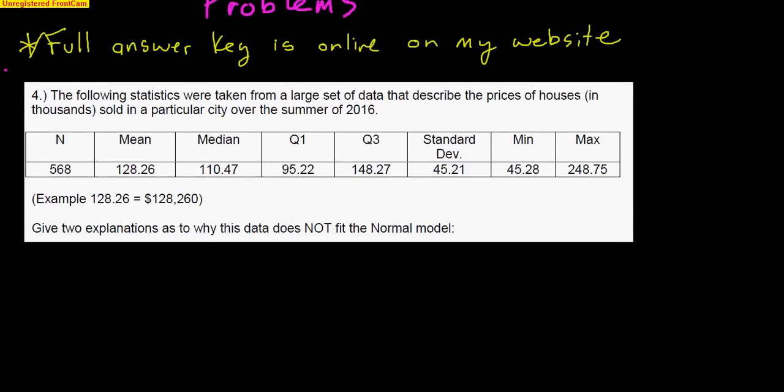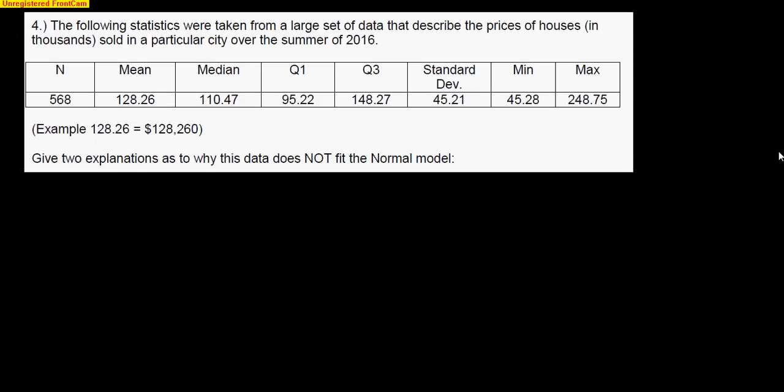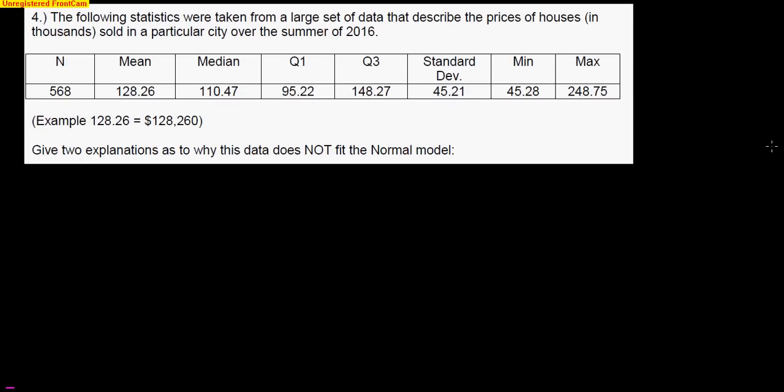Here are a couple of the problems that concerned most students. Number four, the following statistics were taken from a large set of data that describes the prices of houses in thousands sold in a particular city over the summer of 2016. Now, give two examples as to why this data does not fit the normal model. There's actually several different examples you can get, but I just want to give you kind of the top two.